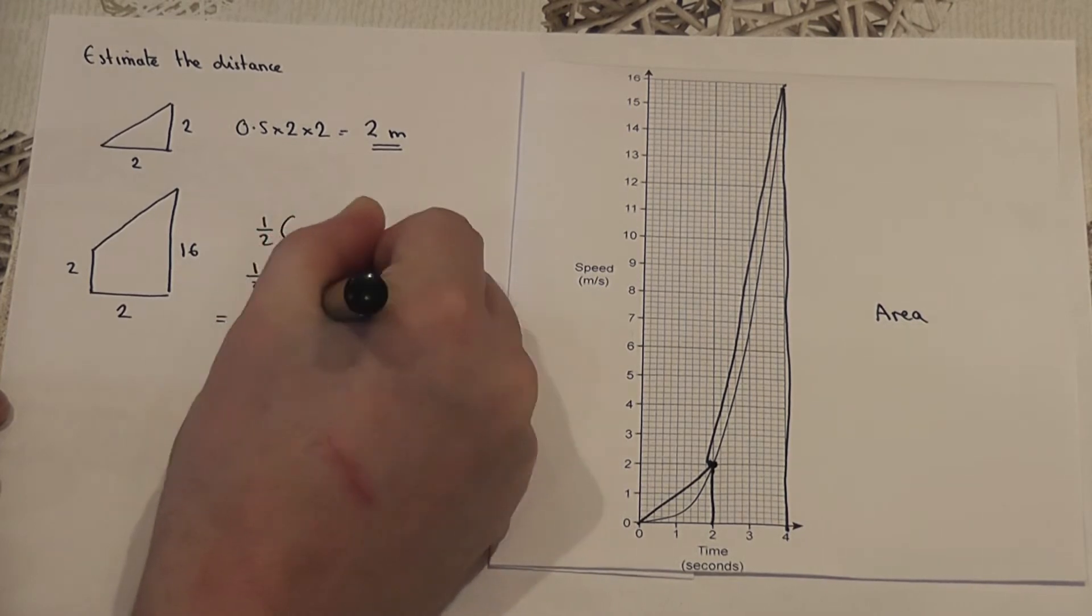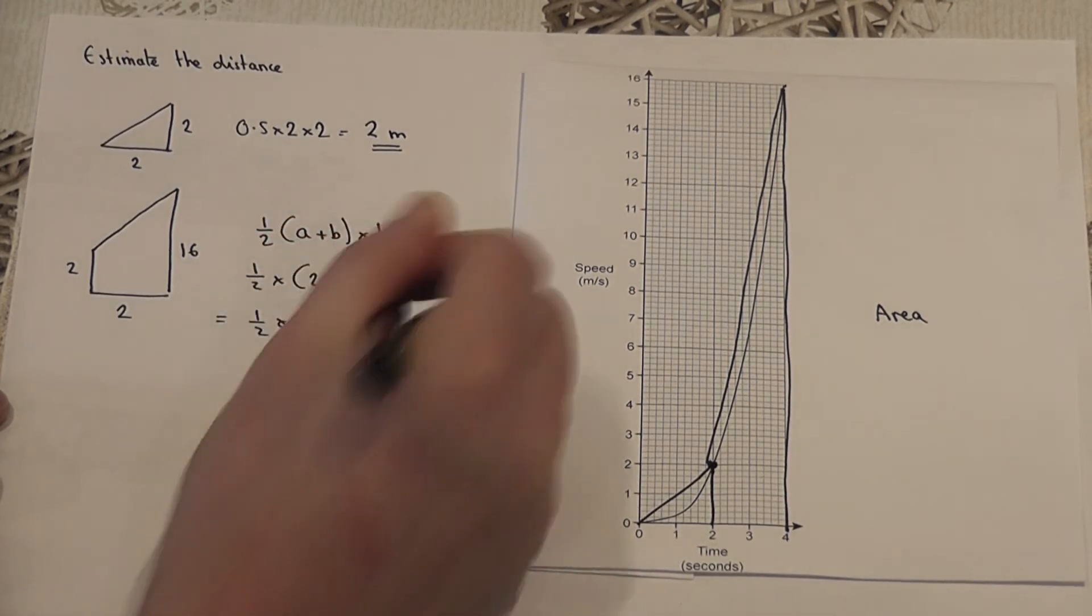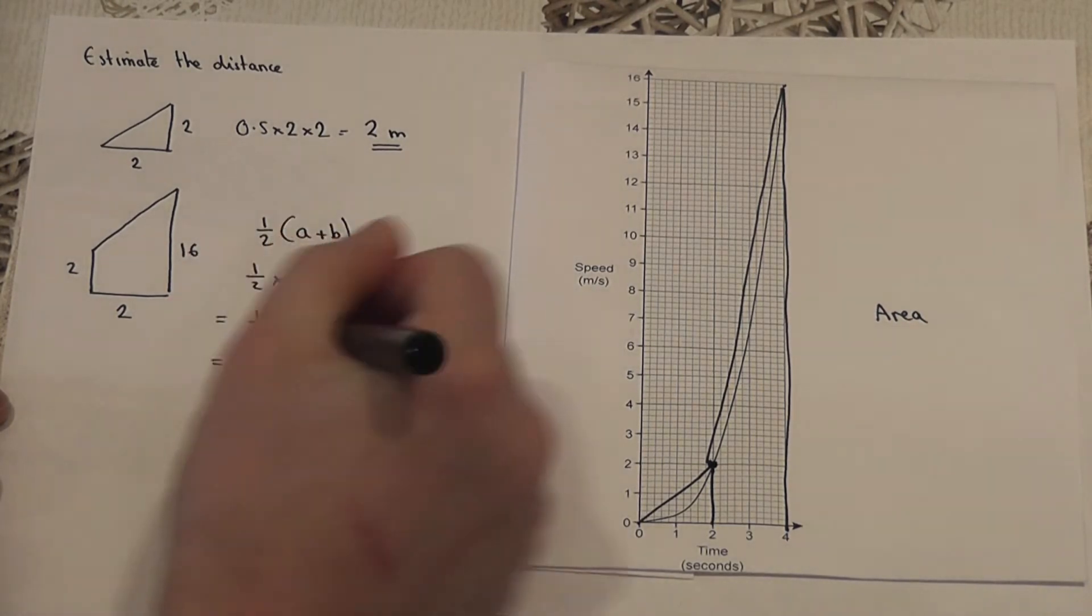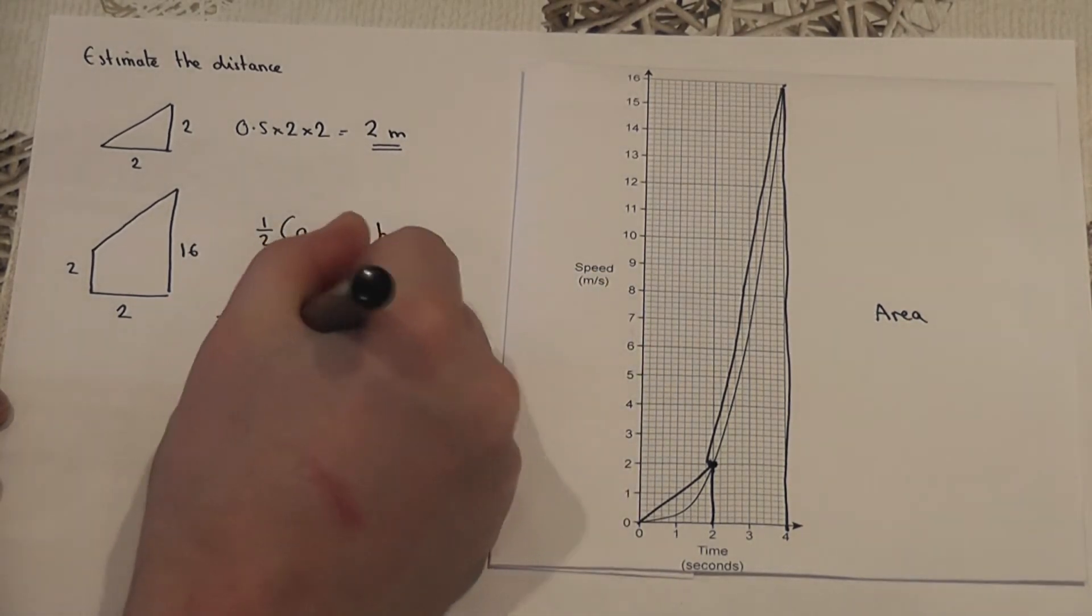Half of 18 times by 2, 2 plus 6 is 18, which when you work it out just gives you the answer of 18 metres.